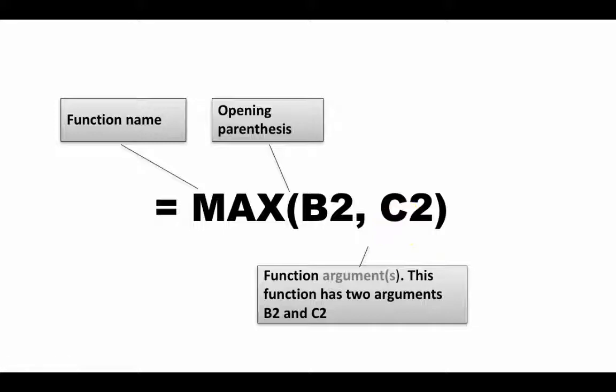So in this example this function has two arguments. These are called the function's arguments. So that is like a function is a black box. You put in values into the function and out pops a result. So b2 and c2 are the arguments that you supply to the function and of course you separate the arguments with commas and then you finish off the argument list by the closing parentheses.